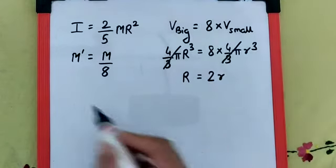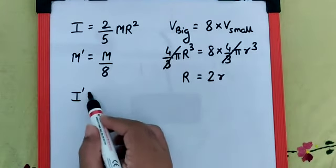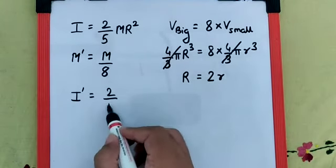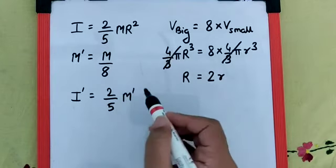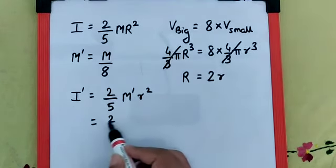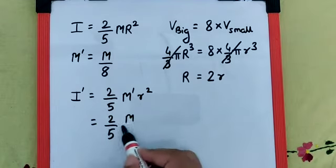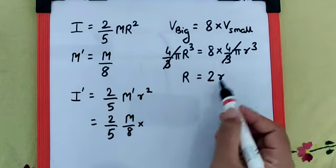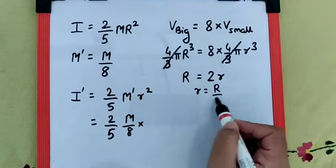Now if we apply the moment of inertia formula, it is going to be I' = 2/5 M'r². Which means 2/5 × M/8, and small r becomes R/2. So if we take the square, it is going to be R²/4.